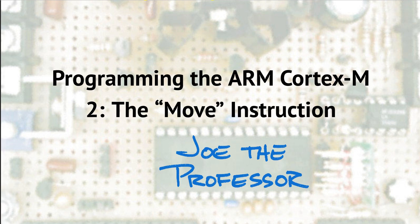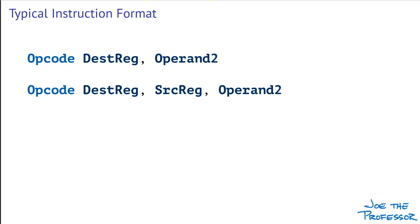Now that we know something about the architecture of the Cortex-M processors, let's start talking about the instruction set. The first instruction we'll consider is the MOVE instruction, which is probably the simplest instruction. But before we dive into that, let's talk about the typical instruction format that you'll see in an assembly language program.